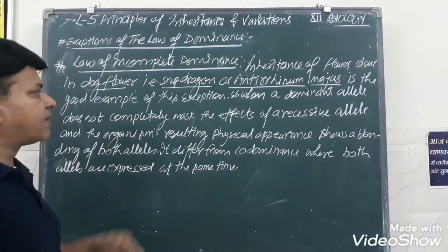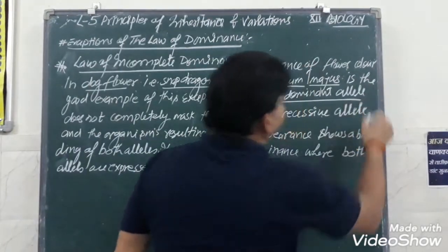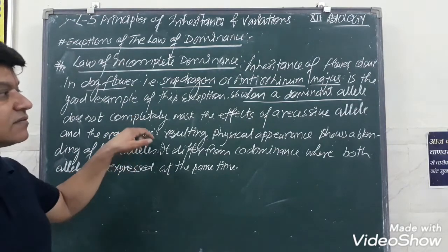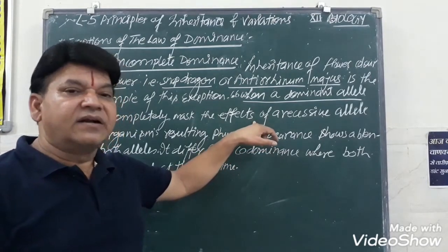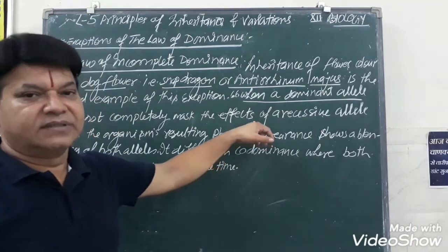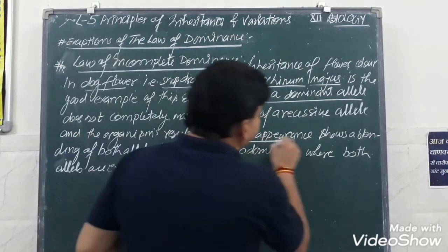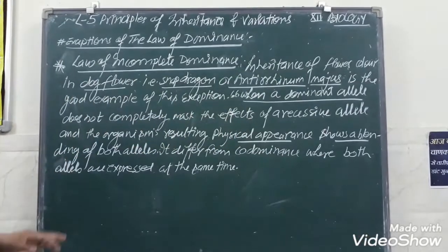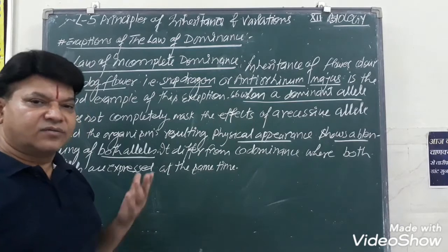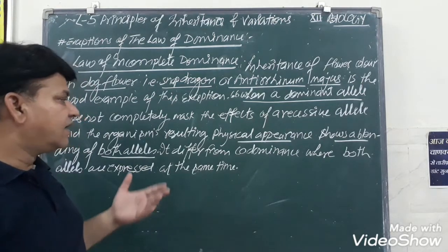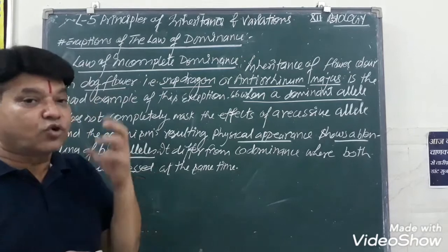This law states that when a dominant allele does not completely mask the effect of a recessive allele, the organism resulting of physical appearance shows a blending from both alleles, means that the different alleles are found in the F1 generation.